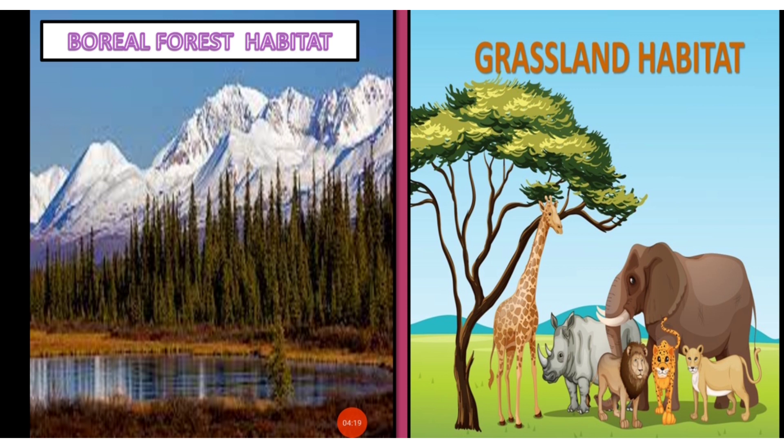In boreal forest habitat, these forests grow in taiga, have short summers and long winters, and receive heavy rainfall. Trees are evergreen, conical, and leaves are needle-like in structure.